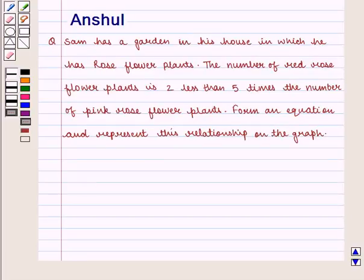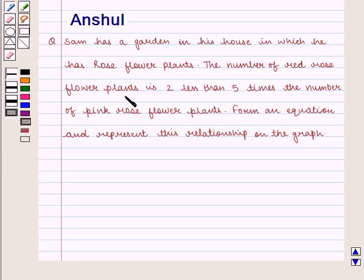Hello and welcome to the session. In this session, we are going to discuss the following question: Sam has a garden in his house in which he has rose flower plants. The number of red rose flower plants is 2 less than 5 times the number of pink rose flower plants. Form an equation and represent this relationship on the graph.